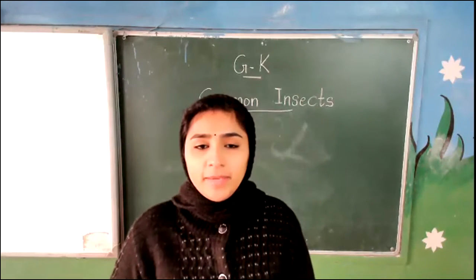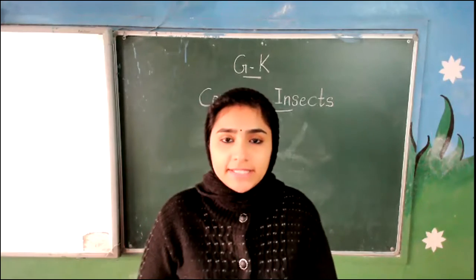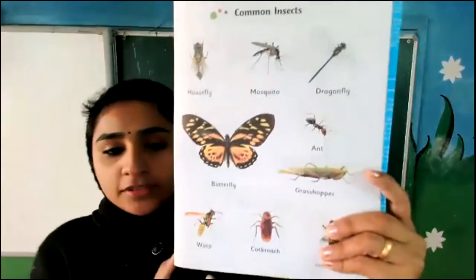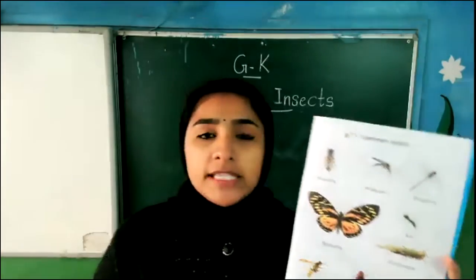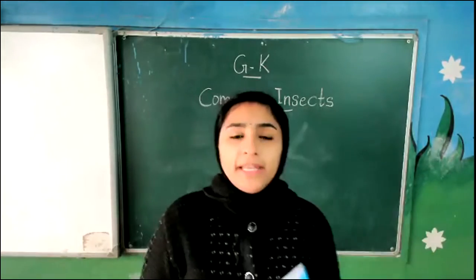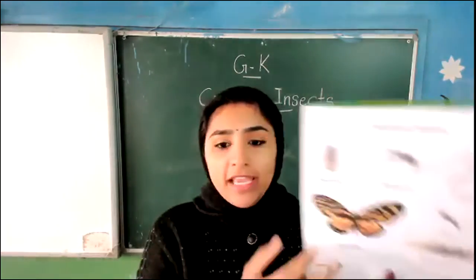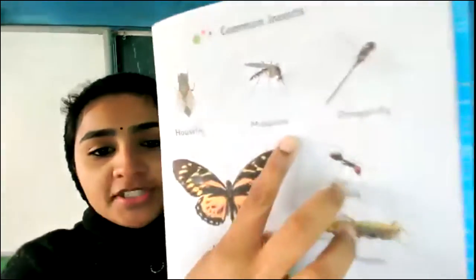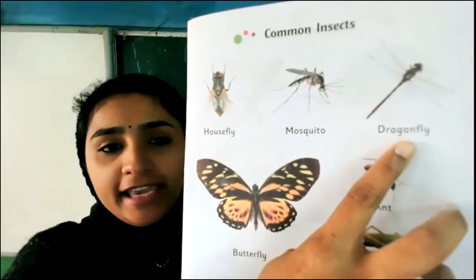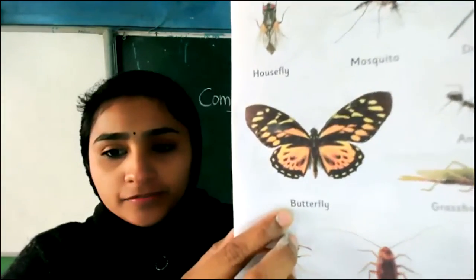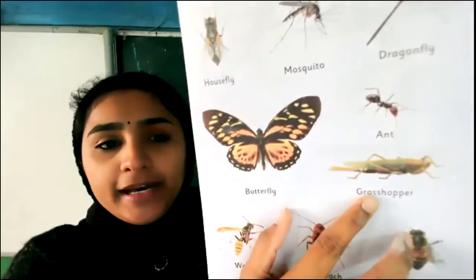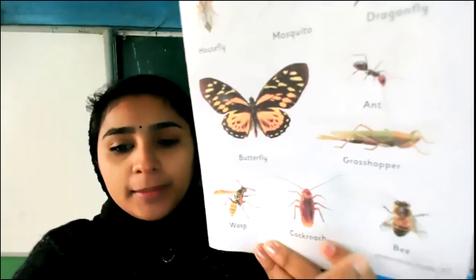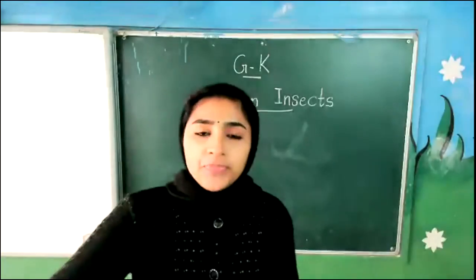Have you all seen the names of insects? These are the common insects. The names which are given in the book, you have to learn. When someone asks you to say any five names of common insects, you will be able to say if you study this. Once again, read with me: housefly, mosquito, dragonfly, butterfly, ant, grasshopper, wasp, cockroach, bee. These are the common insects.